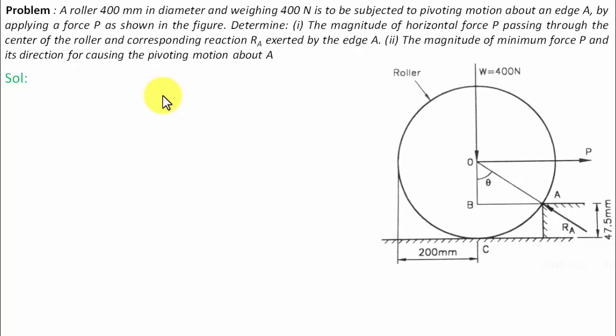Determine first the magnitude of horizontal force P passing through the center of the roller and corresponding reaction exerted by the edge, and secondly the magnitude of minimum force P and its direction for causing the pivoting motion about A.